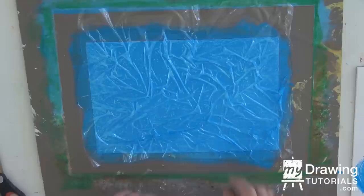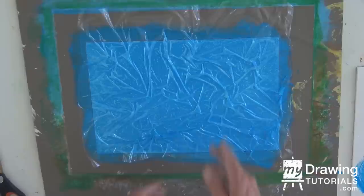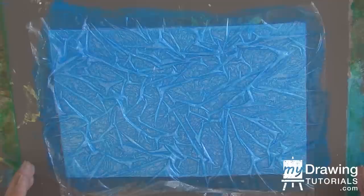One can manipulate the plastic to do a number of things. In this case we scrunched it this way so that we get an icy kind of pattern. You can go all horizontal or all vertical to get different ways of elongation in the paint.